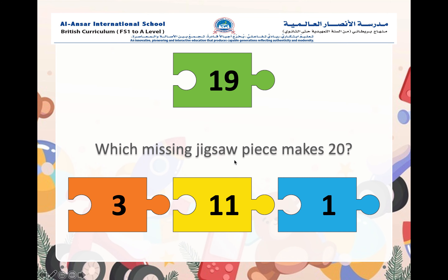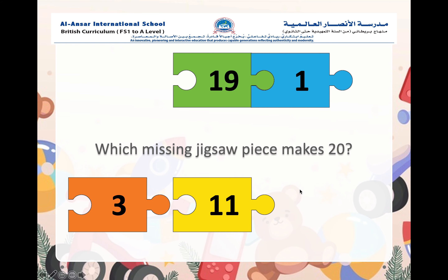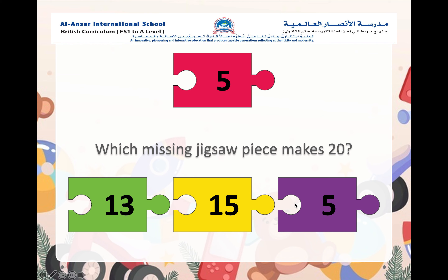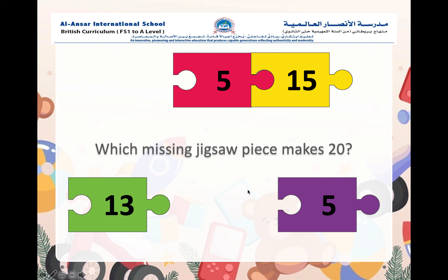Which missing jigsaw piece now makes the number 20? We have the number 19 — which piece do I need to join to make the number 20? If you've guessed that I need to join the number 1, excellent, you are correct! Now we have the number 5 — which piece do I need to join to make the number 20? If you've guessed 15, you are correct. Super job!